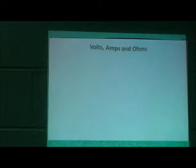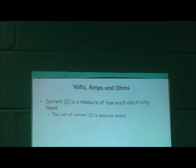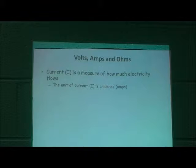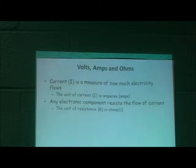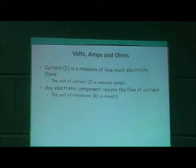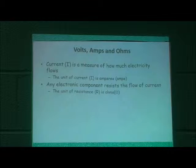Current is simply a measure of how much electricity flows. The unit is called amperes, or amps, designated with the symbol I. Any electrical component is going to resist the flow of current — we call that resistance, and we use the letter R. The unit is ohms, represented by the Greek symbol omega.